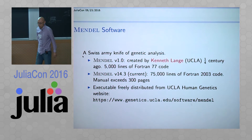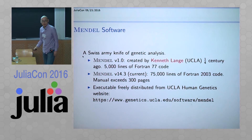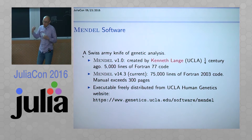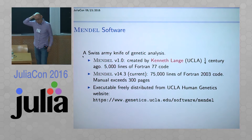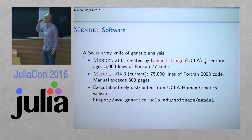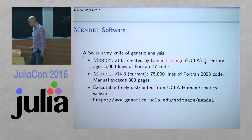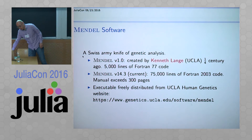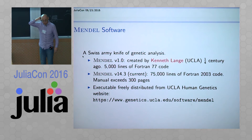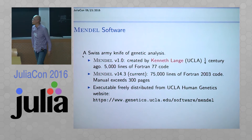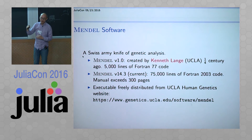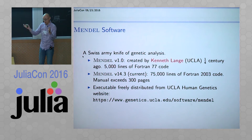It's written in Fortran and now has about 75,000 lines of Fortran code. I myself started working on Mendel a couple of years ago when I was a postdoc at UCLA. The software is not totally open source - it's free; you just Google UCLA Mendel and you get to the software package, you can download it and run it without paying for it. But it's not totally open source; it's kind of closed source - we just distribute the executable. Now we have the idea that it's probably time to bring this open source, but we don't want to continue Fortran development because young people just don't do Fortran anymore. Julia seems a much better designed language.